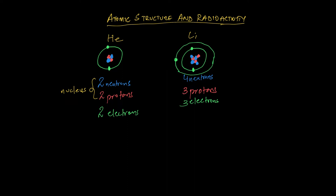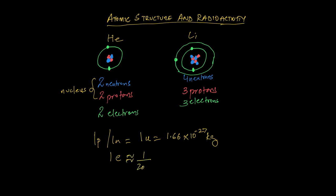So let me give you some data here. One proton and one neutron each have one atomic mass unit — we call it one u. In terms of SI units, it is a very small mass. In comparison, the mass of an electron is approximately equal to one two-thousandth of an atomic mass unit. So the vast majority of the mass of the atom is therefore in the nucleus.